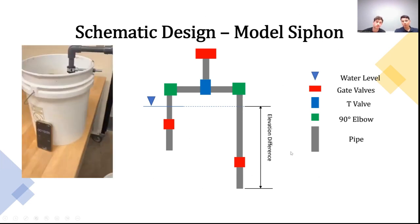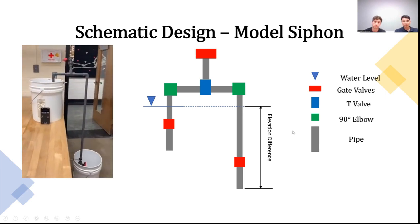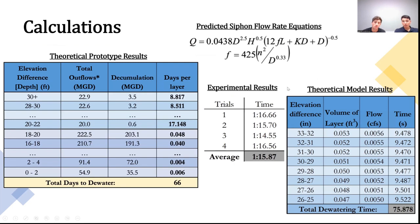This elevation difference will change the water level, which will determine the flow in the pipe. Using the model, we conducted some time trials in order to find the average time it took to transfer the water from the upper to the lower reservoir.